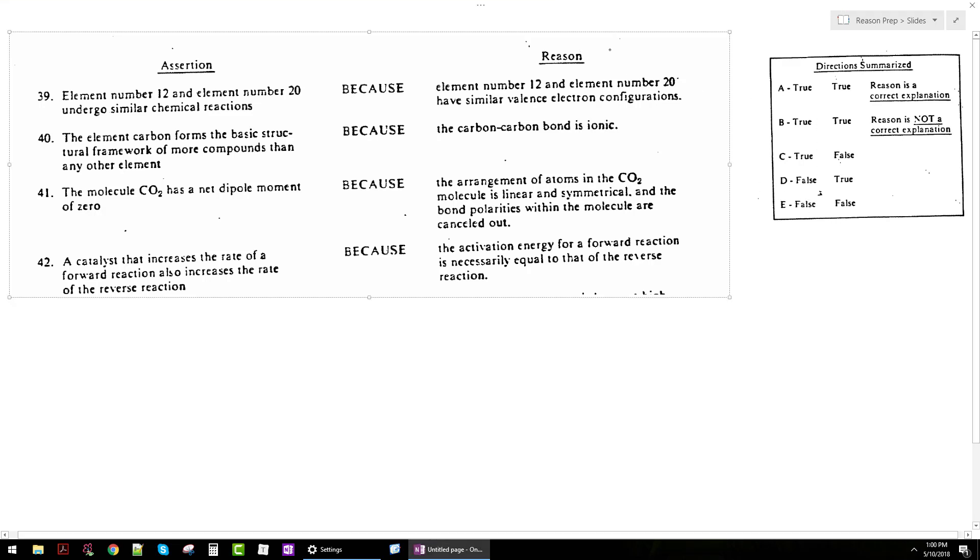On the new test, on the more recent versions, you'll be bubbling in true or false, and then CE into your bubble sheet. Here they do the same thing - true, true, true, false, etc. - but you bubble in A through E. So it's the same thing, just a different way to bubble in the answer.